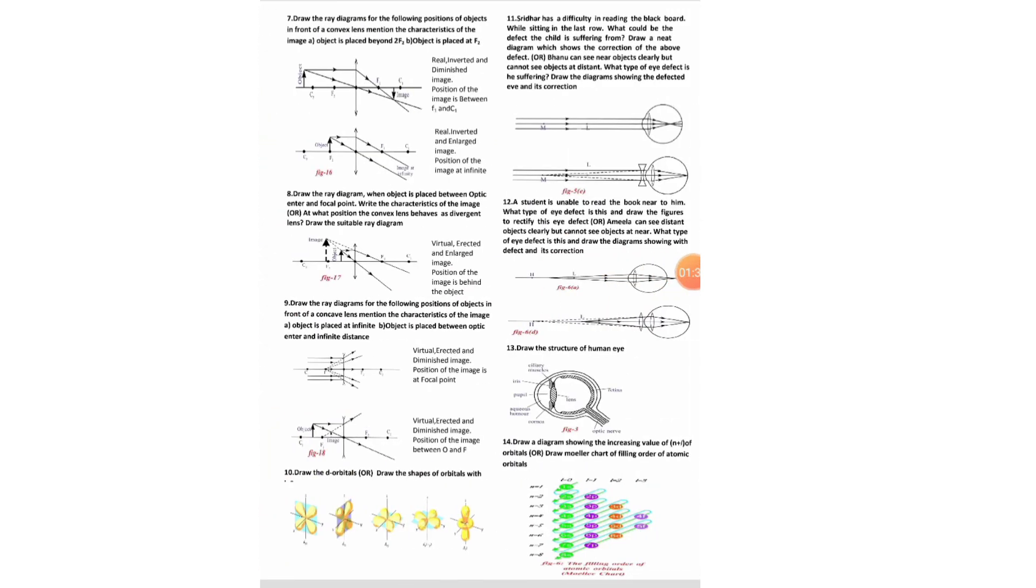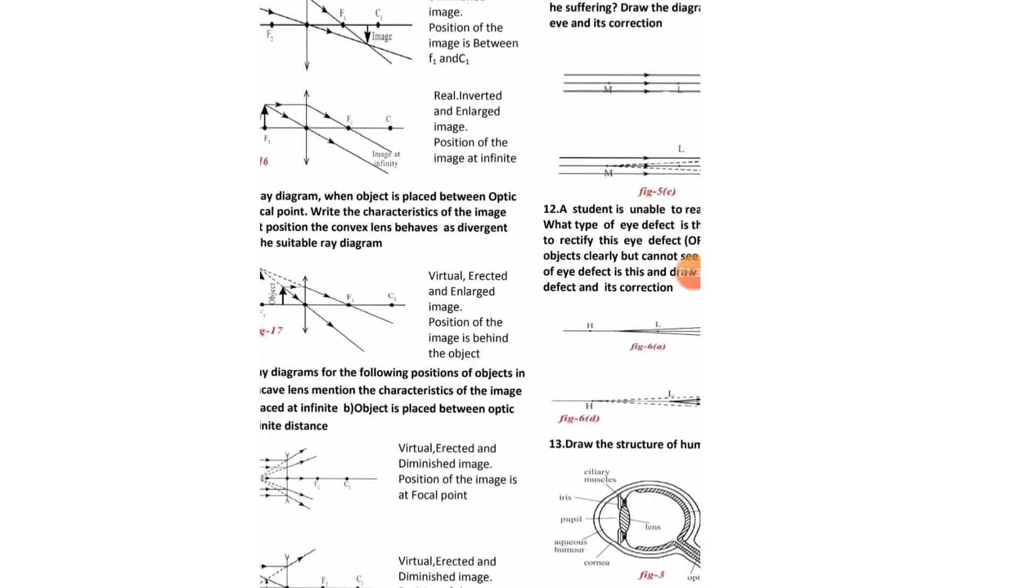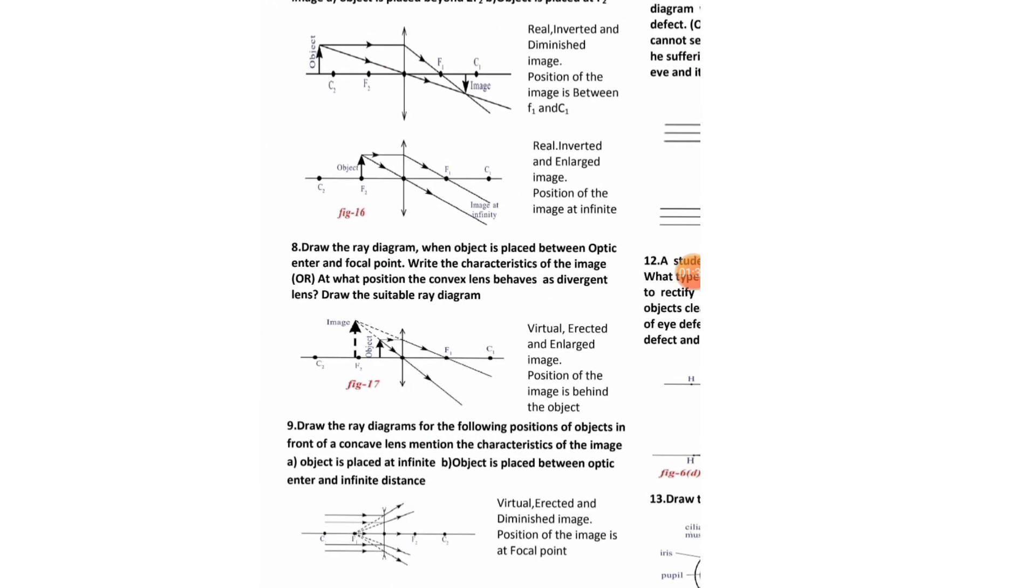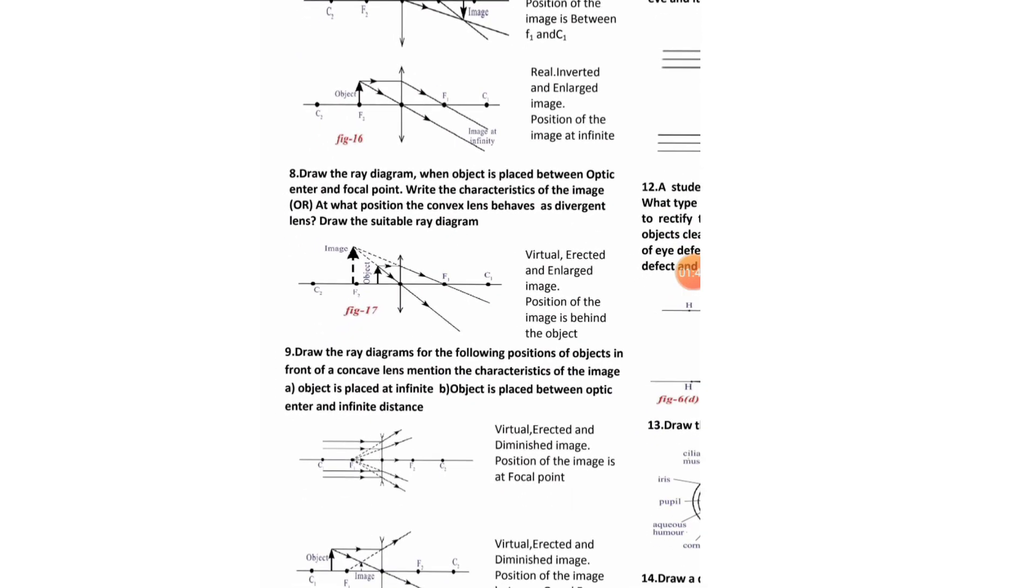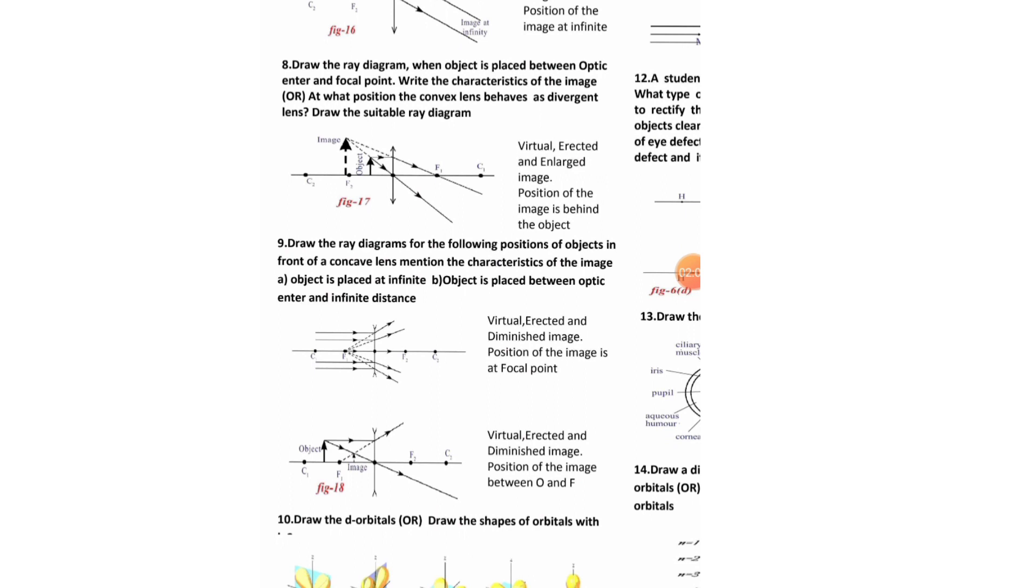Physical science. Now, if you go to the next page, here ray diagram is placed when object is placed beyond 2F2, object is placed at F2. Two diagrams are there in question number 7. Question number 8: draw the suitable diagram, convex lens used as a divergent lens. Ray diagram when object is placed between optic center and focal point. Next, diagram number 7.